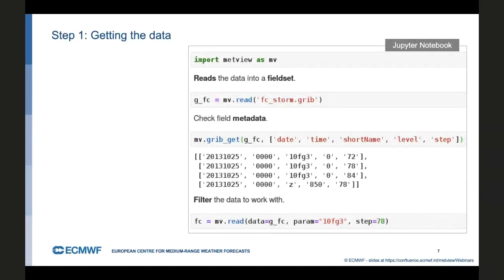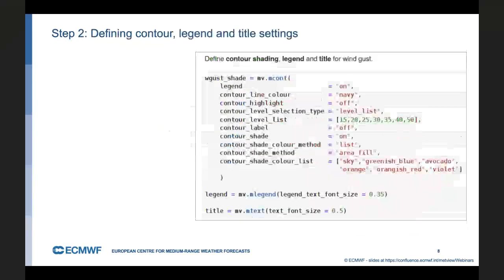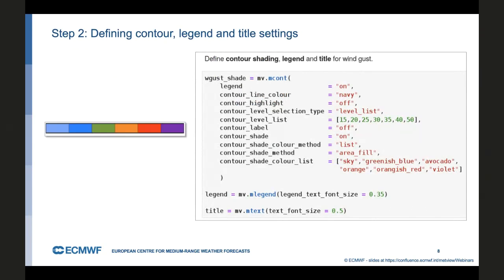You can imagine it as a list of GRIB messages. You can look into the fieldset using the grib_get command. It dumps values for a few ECMWF keys from the GRIB header. We can see that we have four fields or messages in this fieldset: wind gust forecast and geopotential forecast. And in the next line, using the read command again, we filter out one particular wind gust forecast step that we want to plot. This is stored in fieldset FC. Next step, we define the way we want to plot our data. We define contour shading using the mcont icon. We will create a color scheme like this. And then we use mlegend and mtext to customize the legend and the plot title.